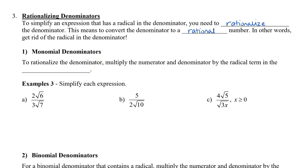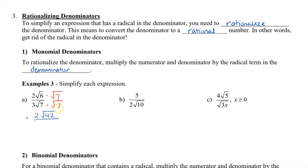To rationalize the denominator for monomials, we're going to multiply the numerator and the denominator by the radical term in the denominator, because when we multiply a radical by itself it becomes a whole number. For example, we have 2√6 divided by 3√7. If I multiply the top and the bottom by √7, this will become 2√42 in the numerator.